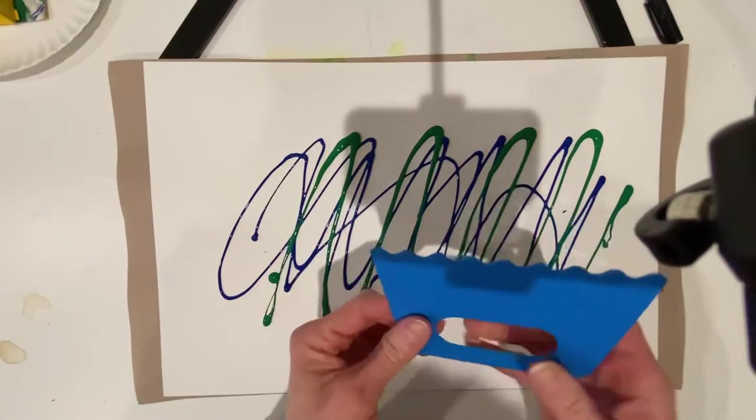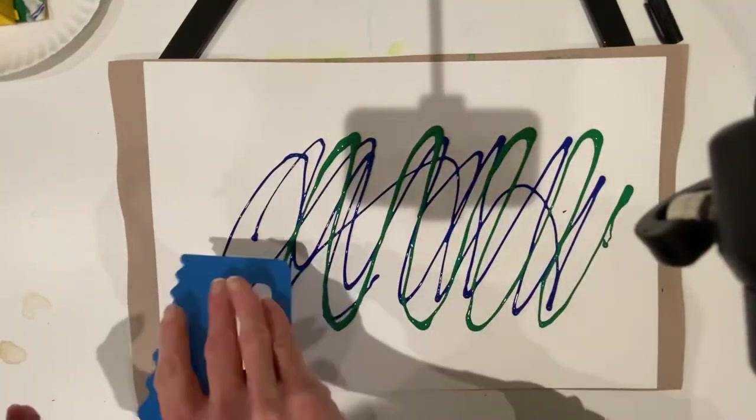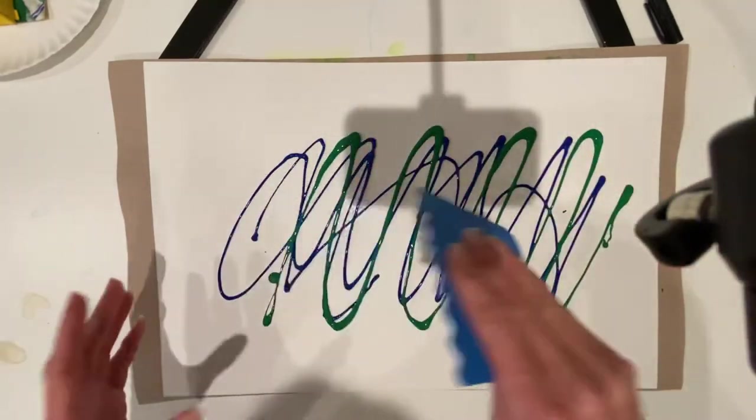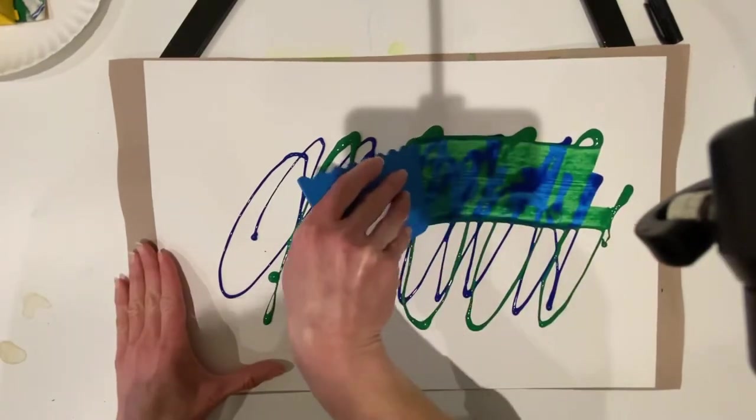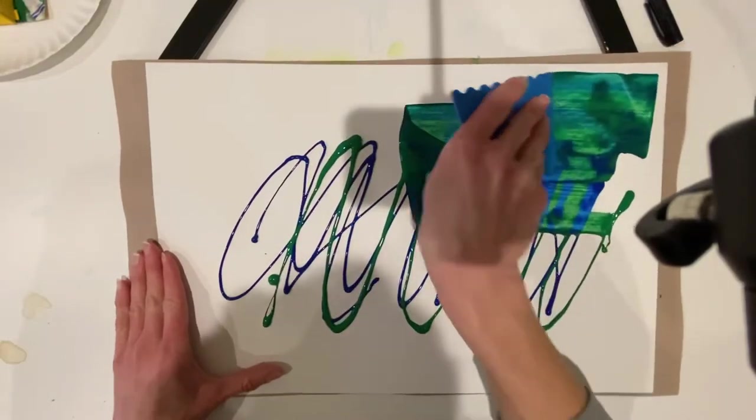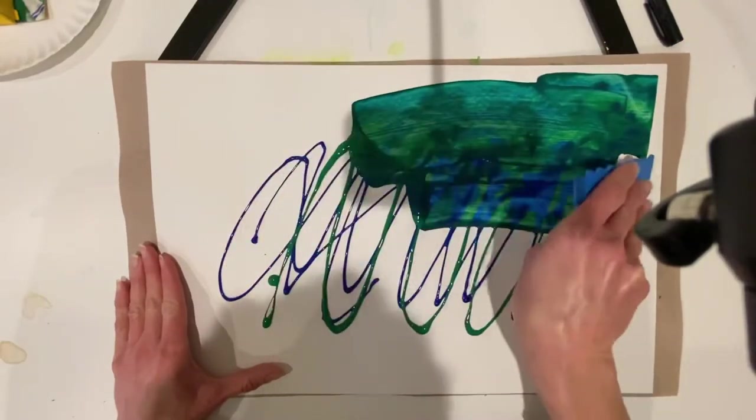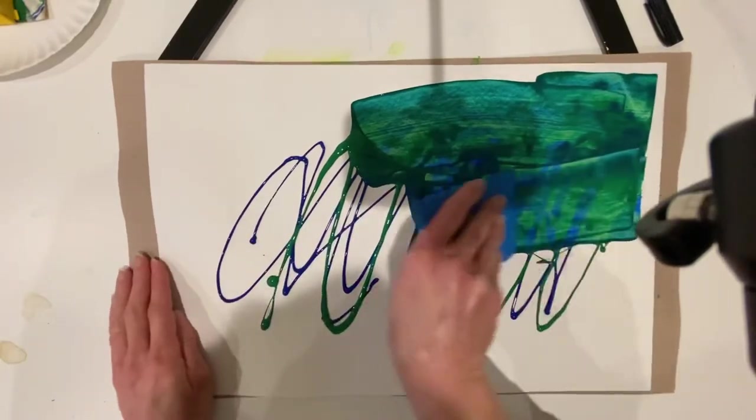To smear the paint around, I think of it like buttering your bread. You are going to see how awesome that is. You get to see some of that paint coming through where the paint was squirted out, you kind of see it where it's stuck to the paper.